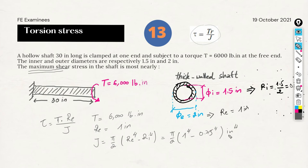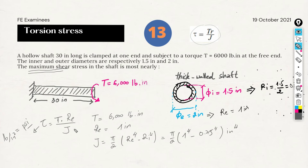The torque is 6,000 pound-inches, the external radius is 1 inch, and the polar moment of inertia is pi over 2 times (1 to the 4th minus 0.75 to the 4th) inch to the fourth power. Checking units: pound-inch times inch over inch to the 4th gives pounds per square inch. Plugging into the calculator: 6,000 times 1 over [pi over 2 times (1 minus 0.75 to the 4th)]. The result is a maximum stress of approximately 5,587.7 psi.